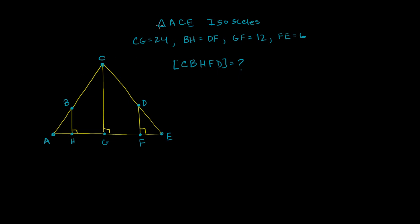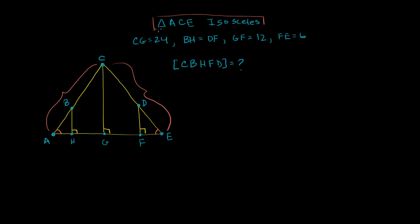In this problem, triangle ACE is isosceles — that's the big triangle. Being isosceles means it has two equal sides, and the base angles must be equal. So these two base angles are equal, and AC is going to be equal to CE. We get all of that from the first statement.